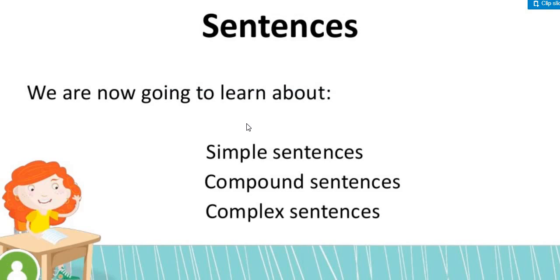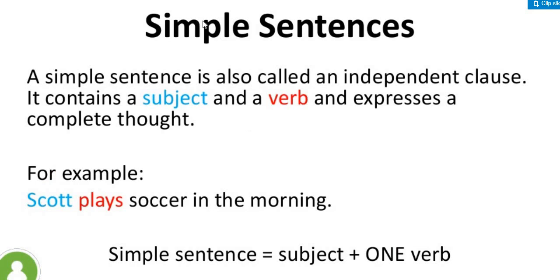Simply, a sentence is a meaningful thought. It should be understood easily. It should have a minimum of one subject and one verb. If my sentence has one subject and one verb, it is simple. For example: 'Scott plays soccer in the morning.' Scott is my subject, plays is the action verb, and my sentence is meaningful, has punctuation, and starts with a capital letter. My sentence is simple.